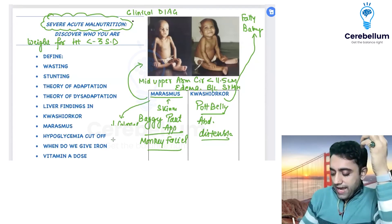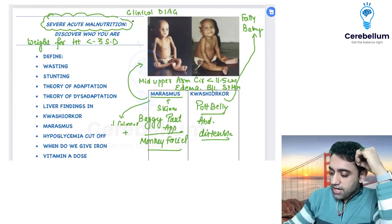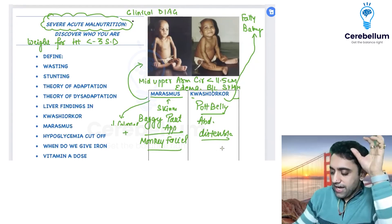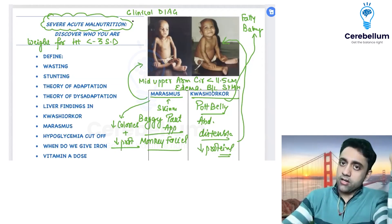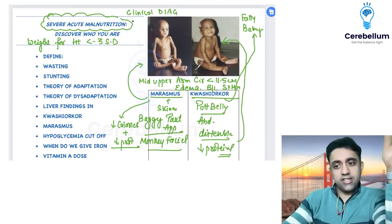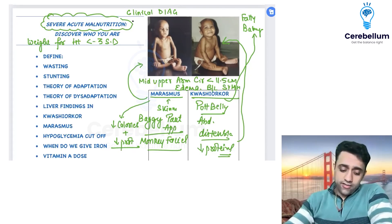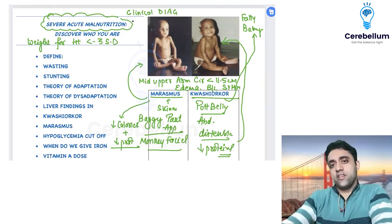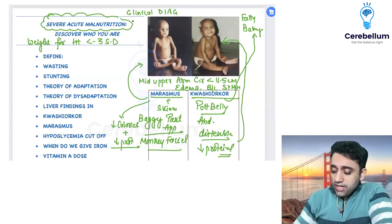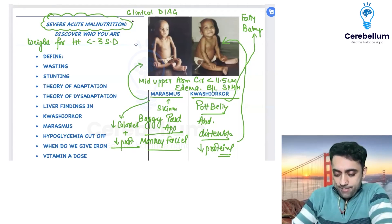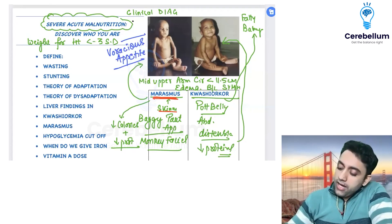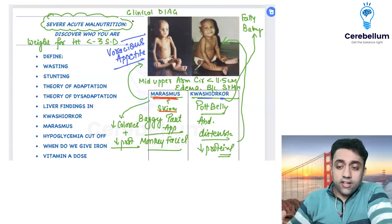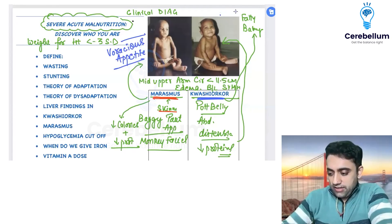Marasmus is a deficiency of both calories and proteins, whereas Kwashiorkor is a deficiency of proteins only, causing hypoproteinemia. SAM babies (Marasmus) look very skinny but have a voracious appetite. Kwashiorkor babies look fatty but have apathy.